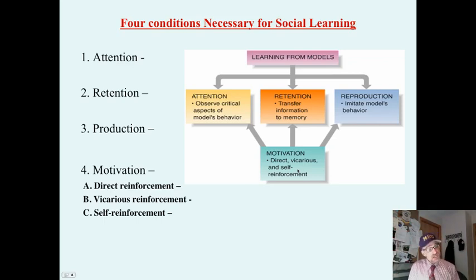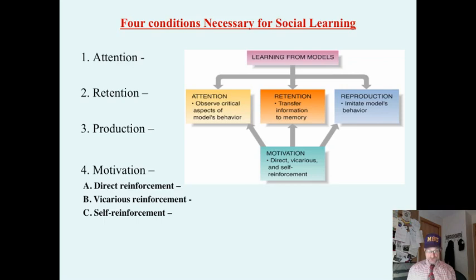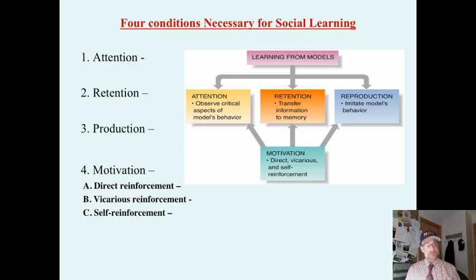Production! Children need to be able to produce the behavior. It has to be within their zone of proximal development. You can see Tiger Woods play golf, but there is no way you can replicate that behavior. So it has to be within their zone of proximal development.